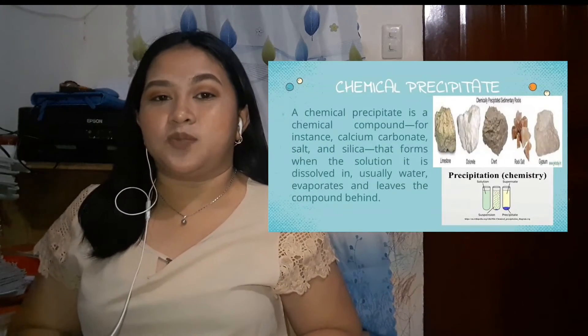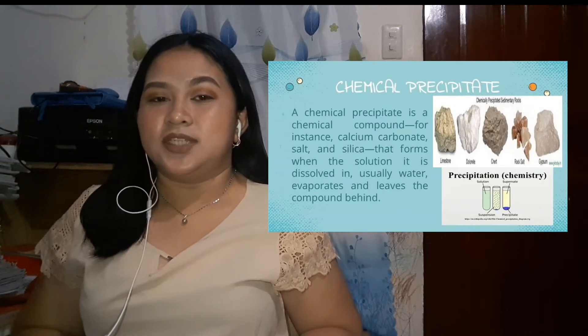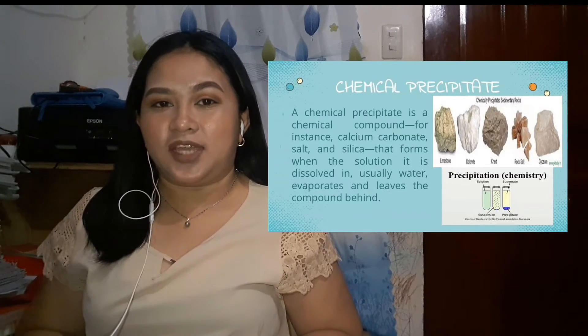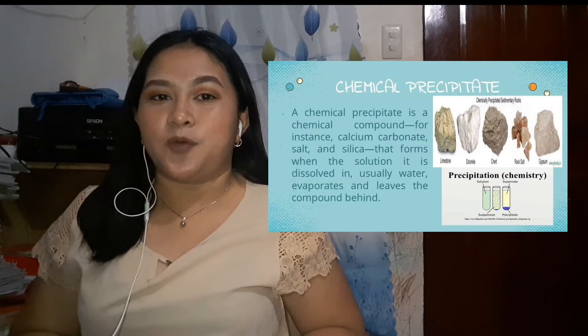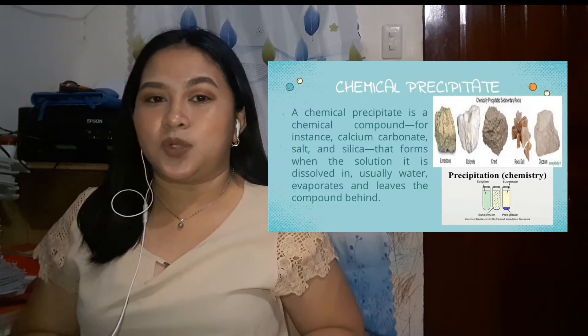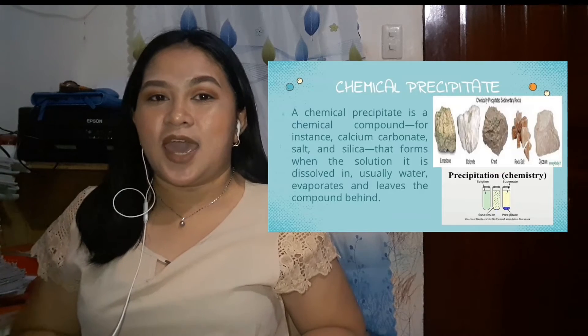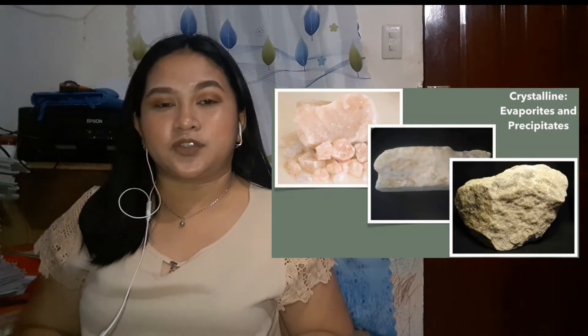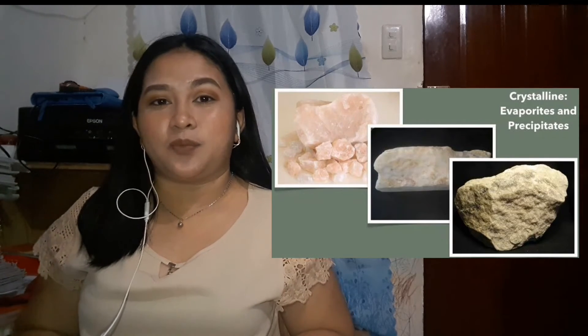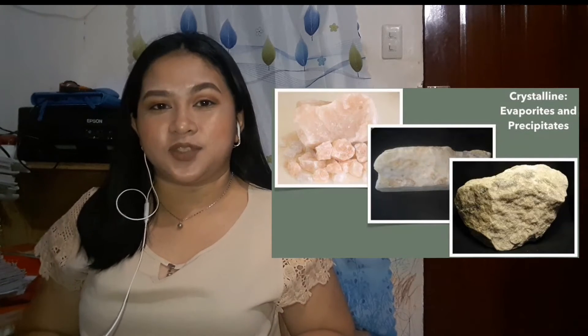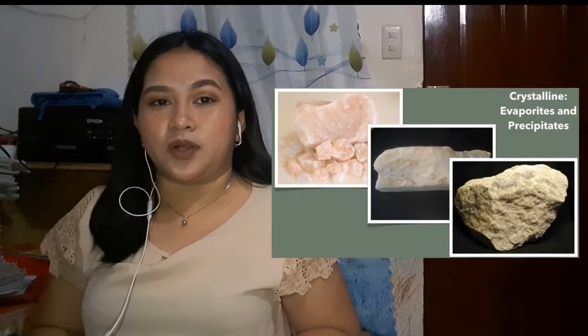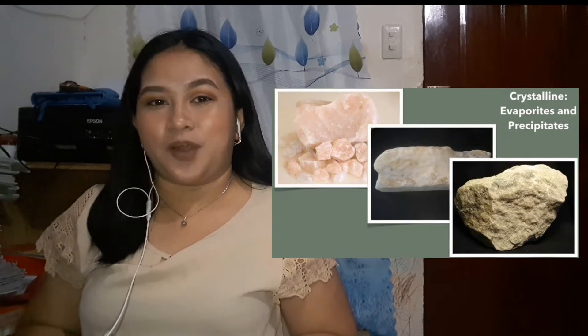Chemical sedimentary rocks like limestone, halite, and flint form through a process of chemical precipitation. A chemical precipitate is a chemical compound — for instance, calcium carbonate, salt, and silica — that forms when a solution, usually dissolved in water, evaporates and leaves the compound behind. This occurs as water travels through the earth's crust, dissolving some of its minerals and transporting them elsewhere. These dissolved minerals are then precipitated when the water evaporates.